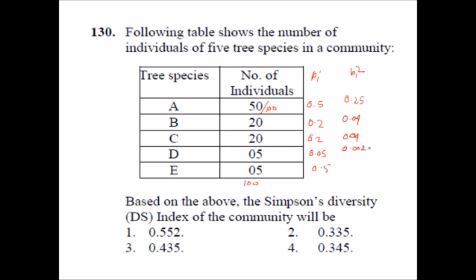Here it will be 0.0025 again 0.0025. So when you will sum up all this, or we can say the formula was summation of pi square.